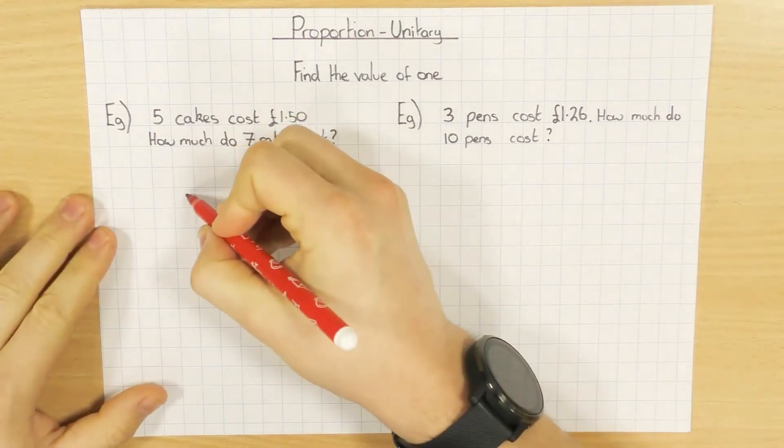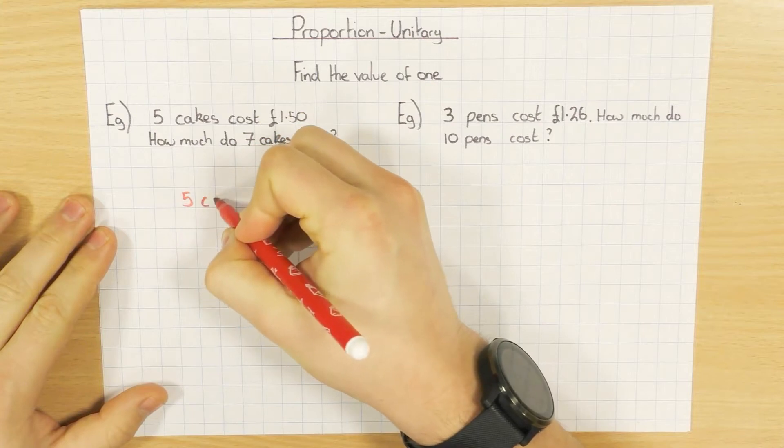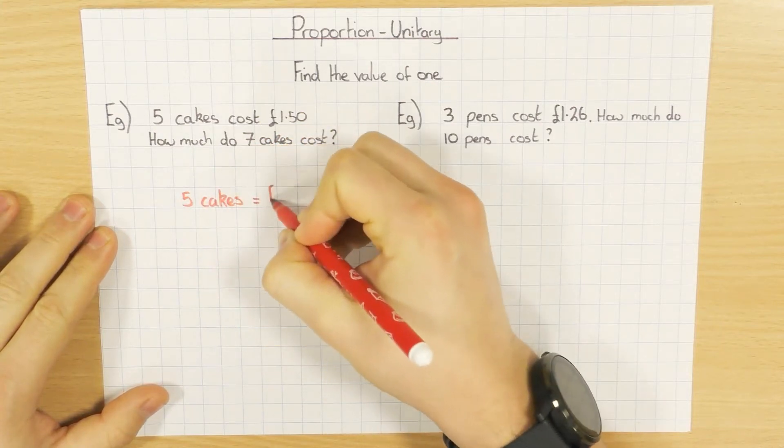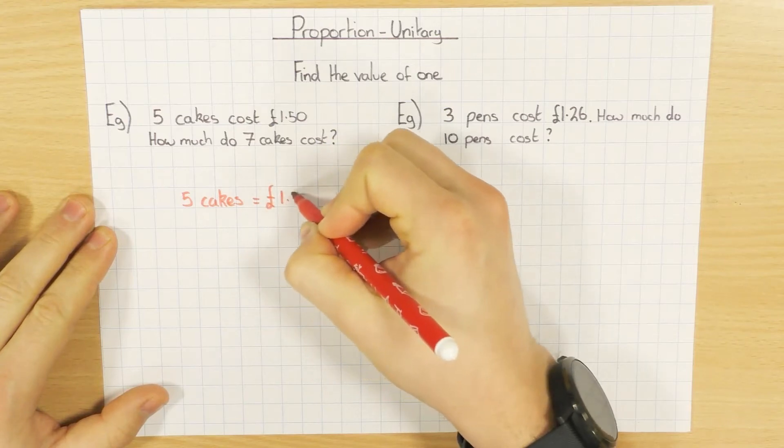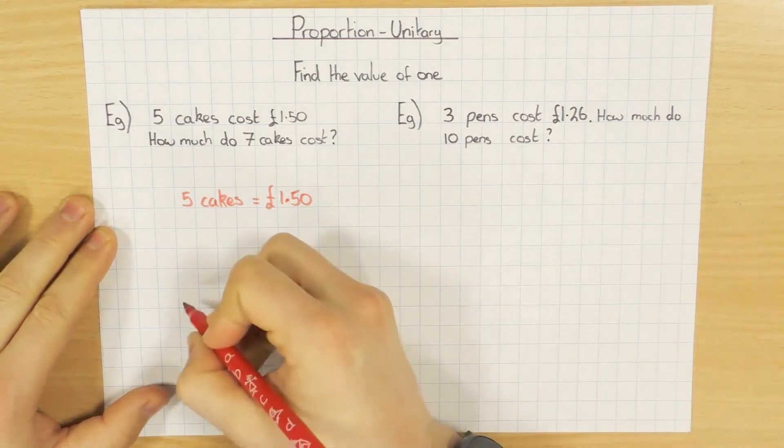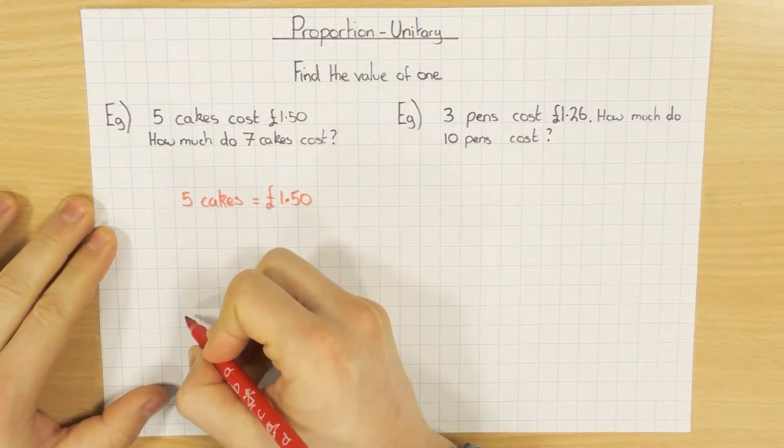So the best way to start off with this is to go, okay, well I've got 5 cakes, and that has the value of £1.50. And I need to get to 7 cakes.